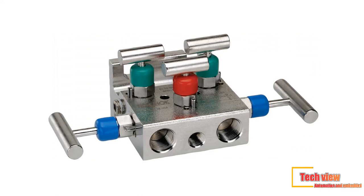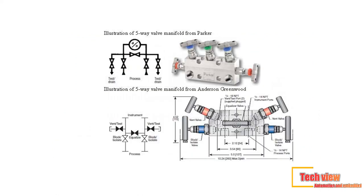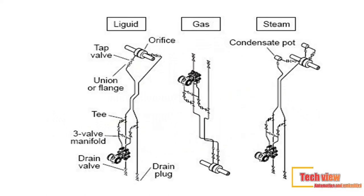Calibration issues can be important to the successful application of this technology. Differential pressure transmitter removal for calibration exposes the transmitter to multiple sources of potential problems that can affect the measurement, not the least of which is the extent to which the transmitter tubing is retightened after calibration. Calibration should generally be performed in situ when possible, and provisions to do so should be addressed during the design phase. For example, the differential pressure transmitter can be purchased with an integral valve manifold that allows easy calibration without disconnecting impulse tubing.